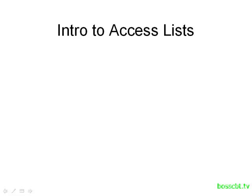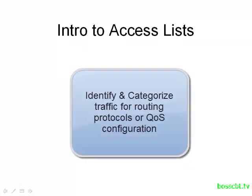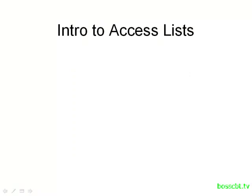It's very common to use an Access List in order to permit or deny traffic. However, you can also use them just to identify traffic for other uses. Perhaps you want to find only certain types of traffic you want to announce in a routing protocol, or you're only looking to identify a certain type of traffic for prioritization, like quality of service commands. Access Lists are pretty flexible in allowing us to identify traffic.